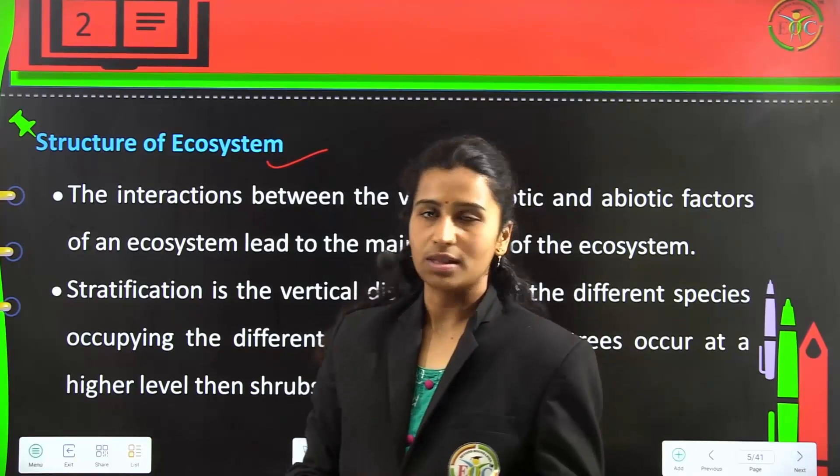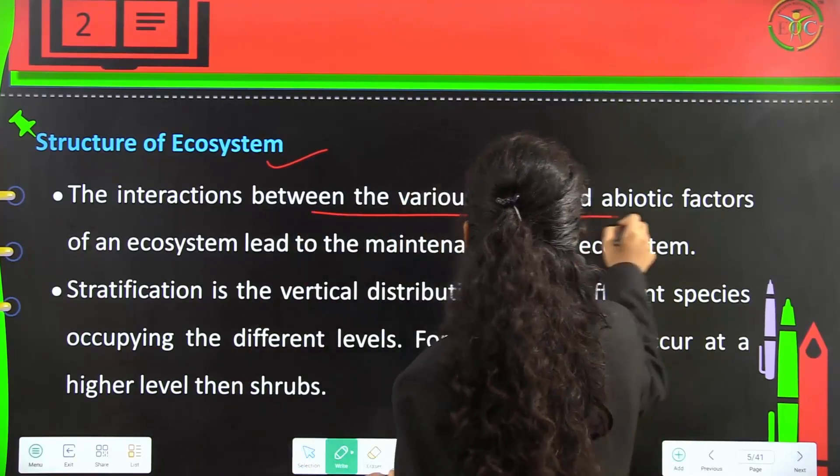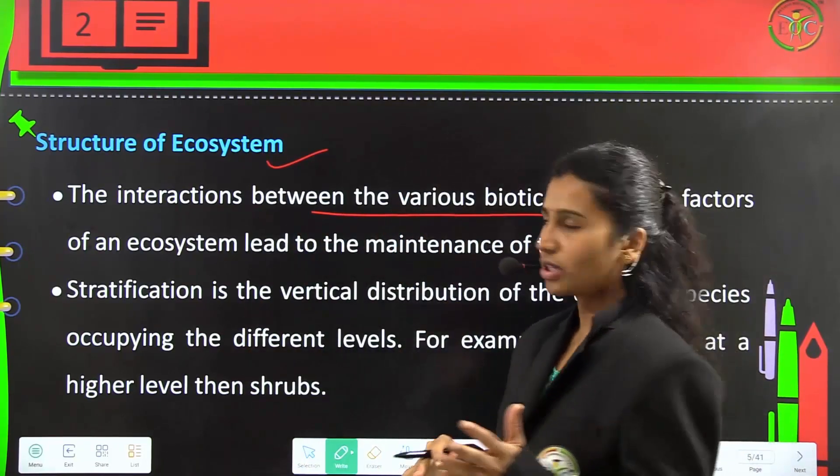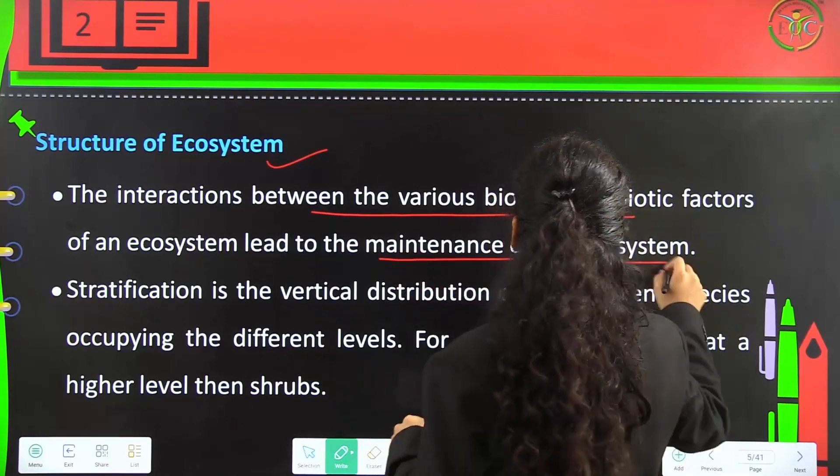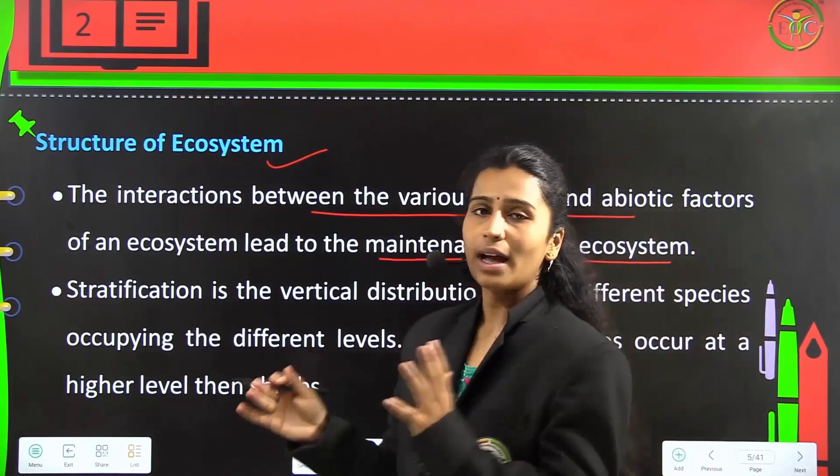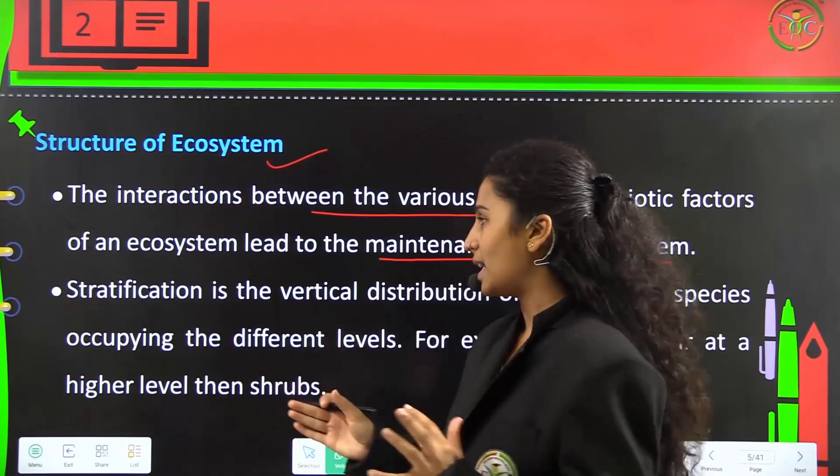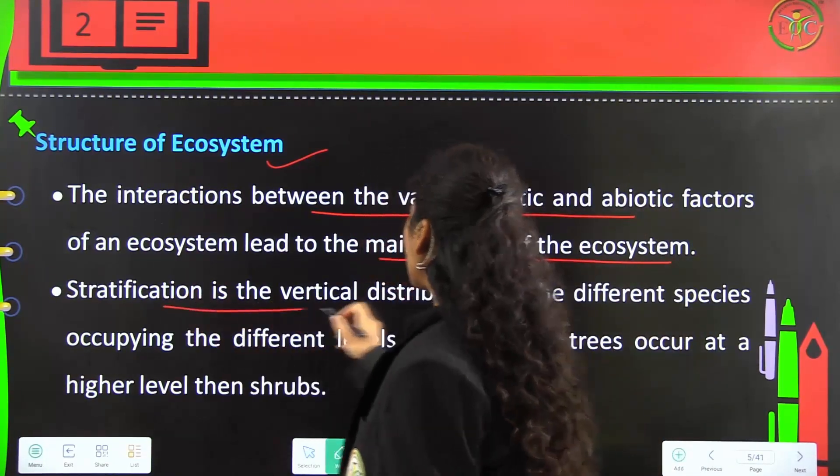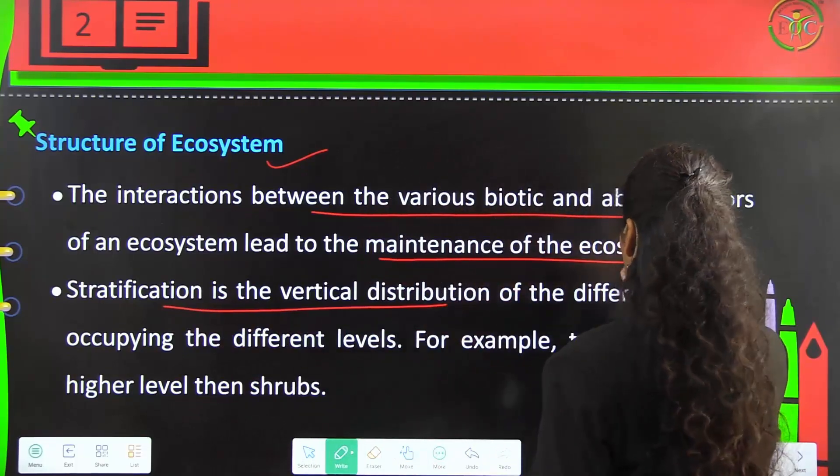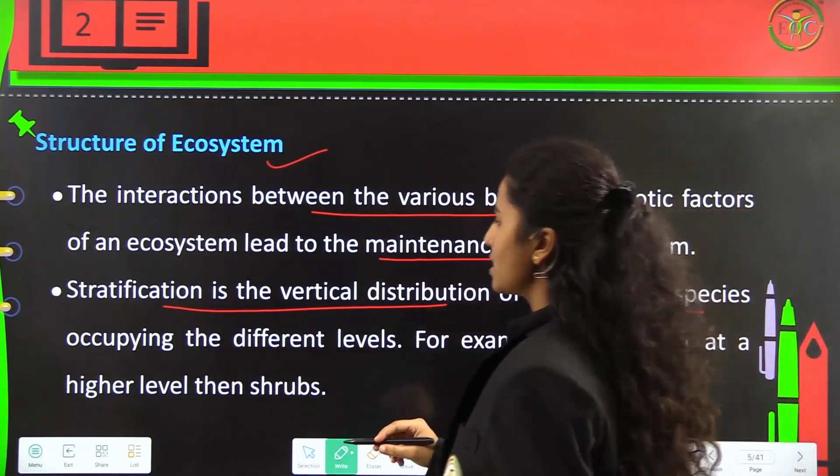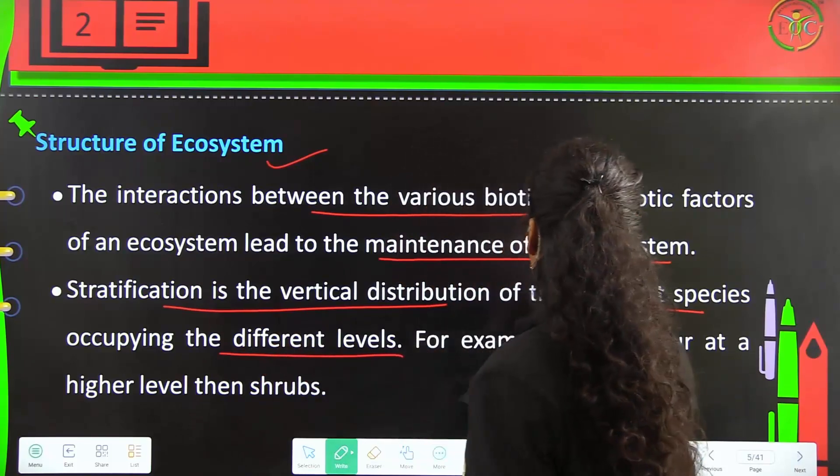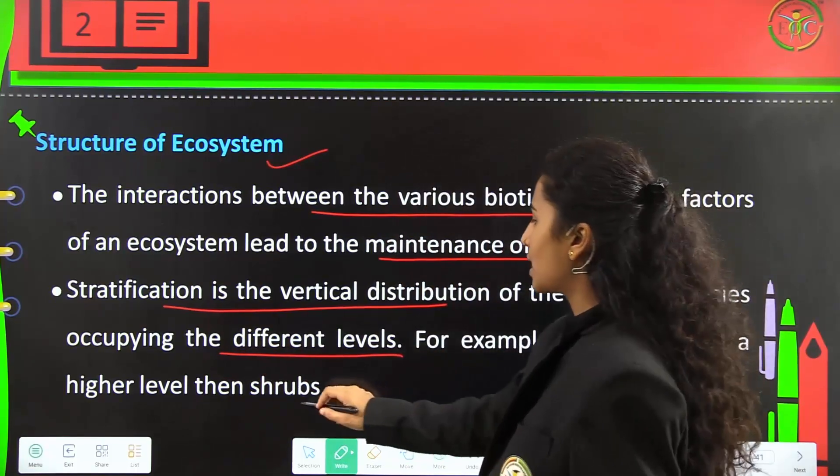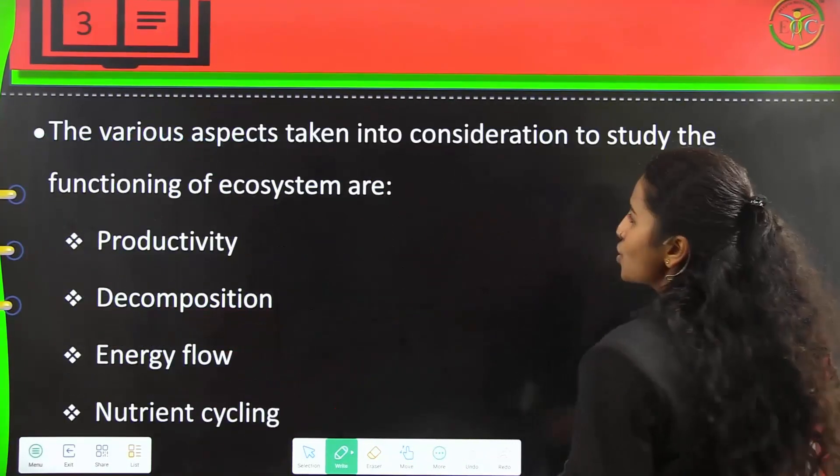Structure of the ecosystem: The interactions between the various biotic and abiotic factors of the ecosystem lead to the maintenance of the ecosystem. Both biotic and abiotic factors should be balanced to maintain a balanced ecosystem. Stratification is the vertical distribution of different species which occupy different levels. For example, trees occur at higher levels, then shrubs.